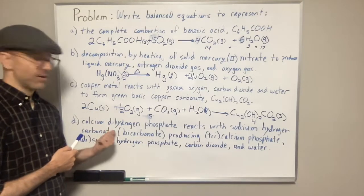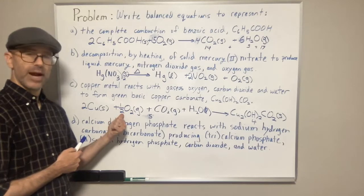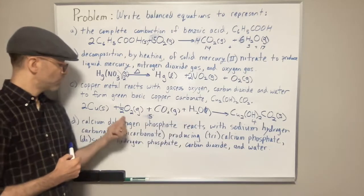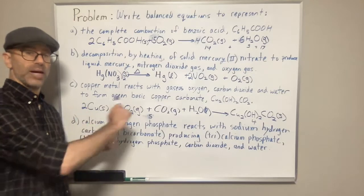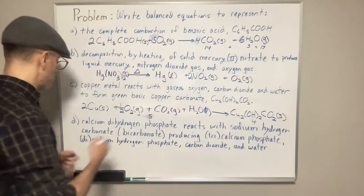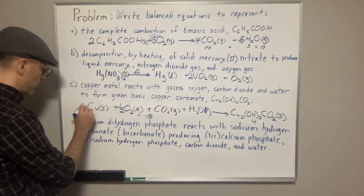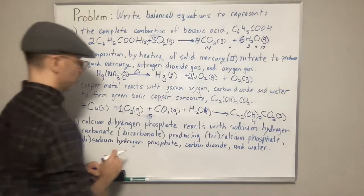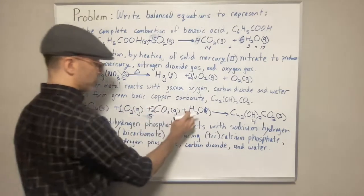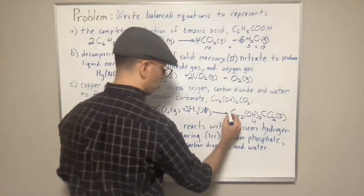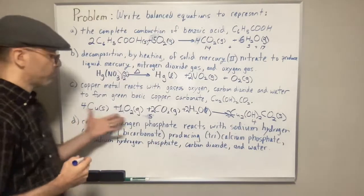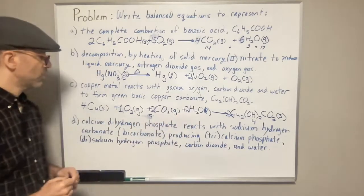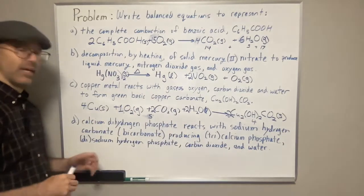We can't keep the fraction, so multiply the entire equation by two to clear it. That gives: 4 Cu + 1 O2 + 2 CO2 + 2 H2O → 2 Cu2(OH)2CO2. Double-check all atoms — if done correctly, the equation is fully balanced.